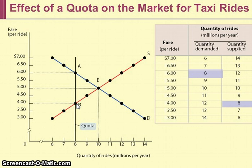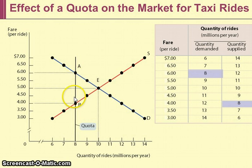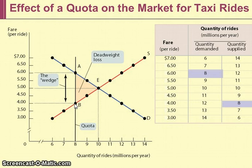Producers are going to charge $6 a ride because they can — because consumers are willing to pay — even though they would be willing to do them for $4. So there's a $2 difference, and that $2 difference is the amount of money that the taxi drivers earn just for having the medallion. This wedge is placed between the demand price and the supply price at the quota limit, which will result in deadweight loss.